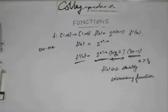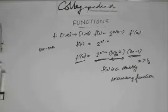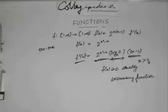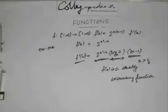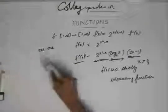Now since f(x) is a strictly increasing function, we know that using the properties of one-to-one functions — if f(x) is a strictly increasing function, then f(x) is a one-to-one function. Now let's prove that it's an onto function.